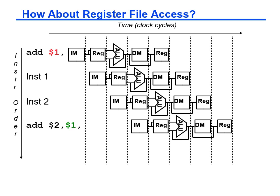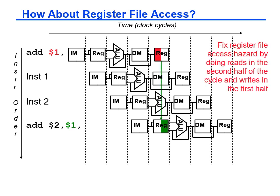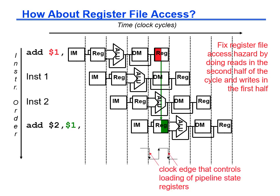In the same way as the memory, a single register file can become a structural hazard. To resolve this, the MIPS design assumes two read ports and that register reads occur in the second half of the clock cycle after the writeback stage completes the register write in the first half. The diagram on the bottom shows how the falling edge clock controls loading the pipeline state registers, and the rising edge controls writing to the register file.